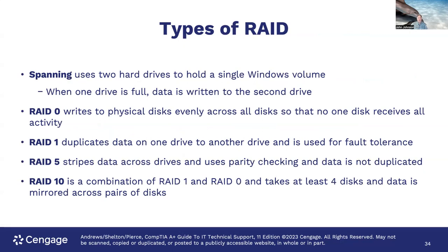Spanning is when you use two hard drives to hold a single Windows volume — you span the volume across multiple drives. When one drive is full, data can be written to another. So if you had a 4-terabyte drive, you could effectively have an 8-terabyte volume by spanning across two.